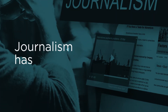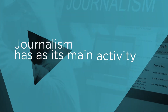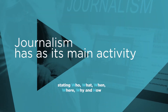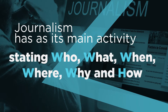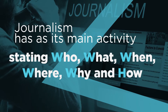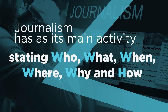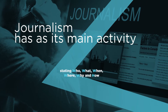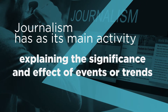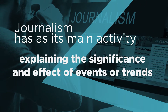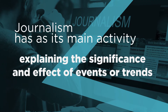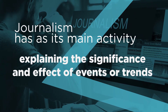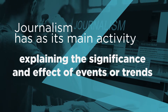Journalism has its main activity the reporting of events, stating who, what, when, where, why, and how, and explaining the significance and effect of events or trends. These elements are often treated in different types of reports.